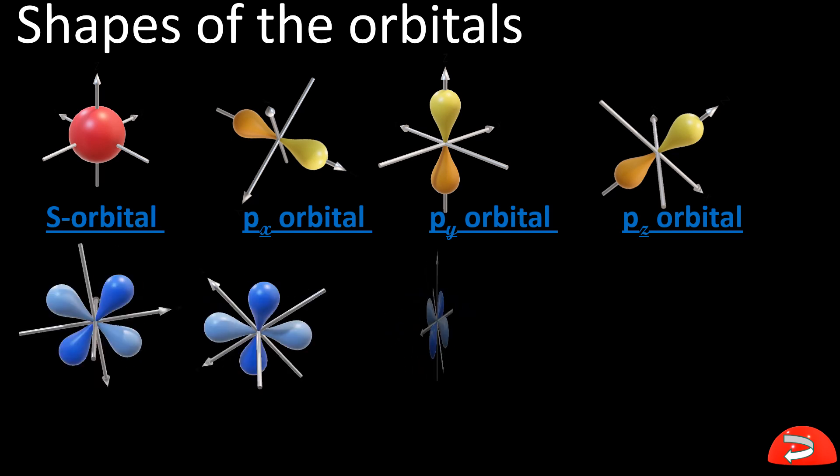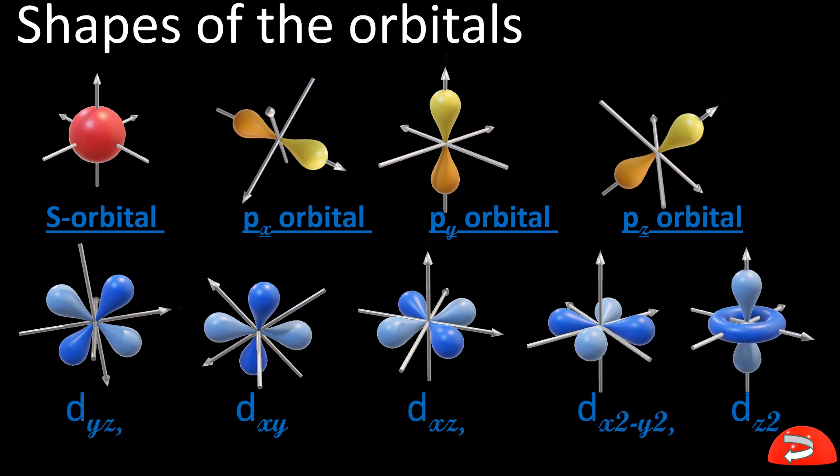Now see the d orbitals. The d orbitals are named dyz, dxz, dxy, dx²−y², and dz². These are the names exactly. For the s orbital, we simply say s orbital. For p, there is px in the x orientation, py in the y orientation, and pz in the z orientation. For d, we have dyz in the y-z orientation, dxz in the x-z orientation, dx²−y² with its specific orientation, and dz² with another specific orientation. These are all the orbitals of d, these are the orbitals of p, and this is the orbital of s.